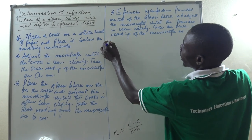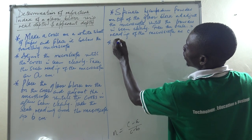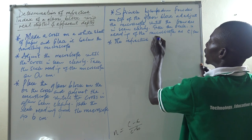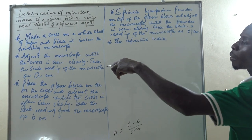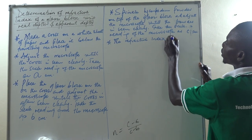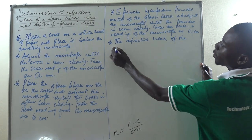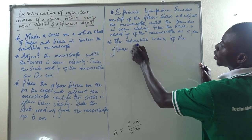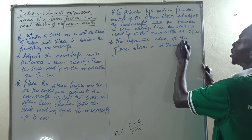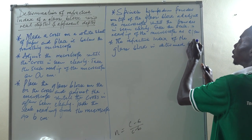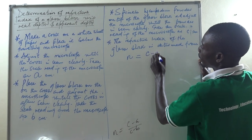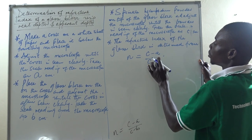And then lastly, the refractive index of the glass block is determined from: n equals C minus A, over C minus B. After sprinkling the powder, make an adjustment until you see it clearly, and then calculate the refractive index using that formula.